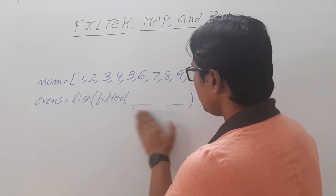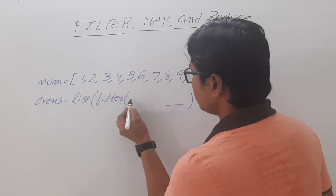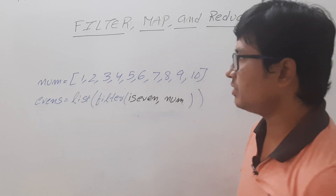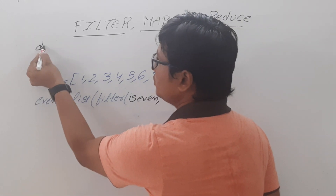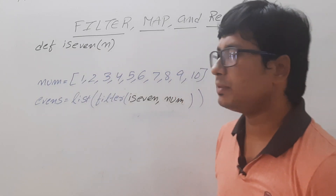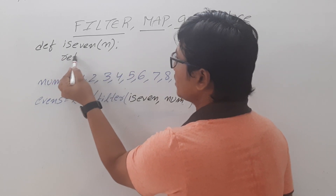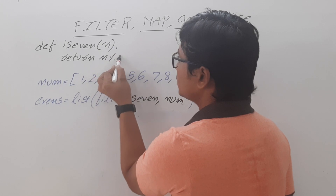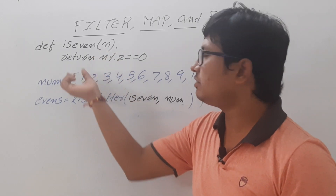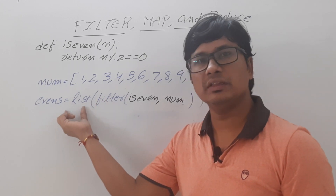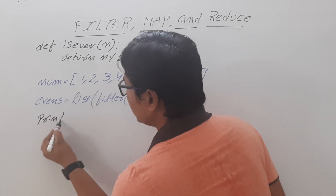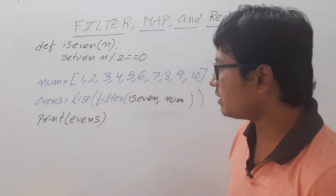The function I will use is called iseven. I define it using the def keyword: def iseven(n): return n % 2 == 0. The meaning is: if the given number is even, it returns True, and that element is included in the filtered list. So if I write print(events), I will get a list of even numbers. The even numbers from the list are 2, 4, 6, 8, 10 — that will be the output.